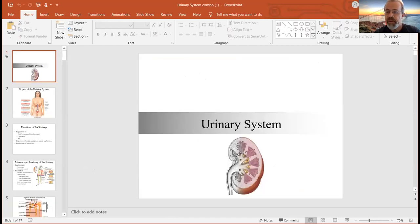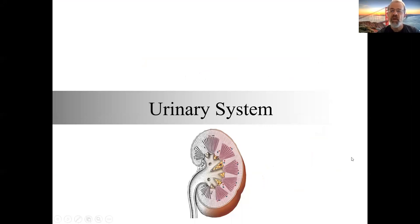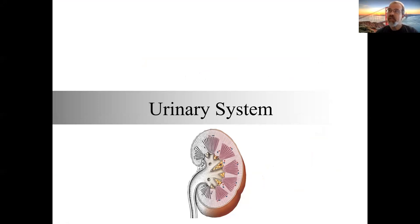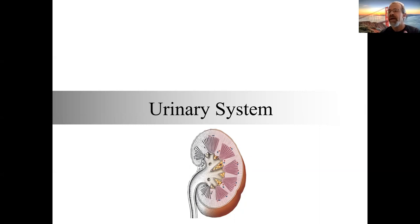Let's go ahead and start with the actual lecture. So, urinary system — we've covered a lot of systems this semester: muscular, nervous, digestive, cardiovascular, respiratory. The urinary system is probably one of the most complex, in the sense that it encompasses really the other systems as well. The way the urinary system functions involves a lot of interaction with the digestive system and the cardiovascular system, so there are a lot of interrelationships.